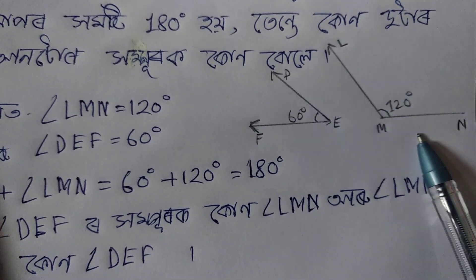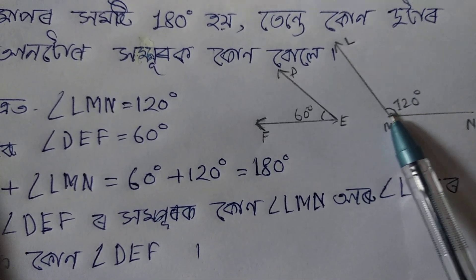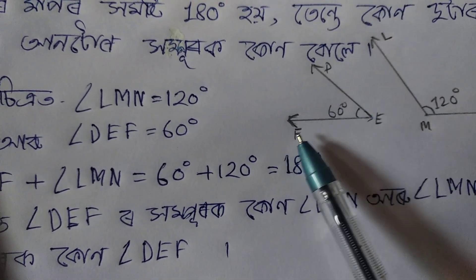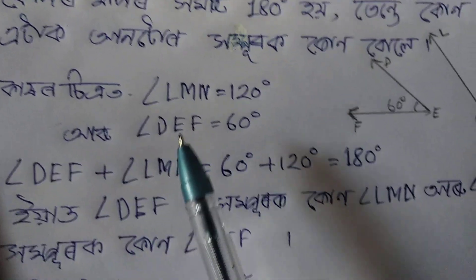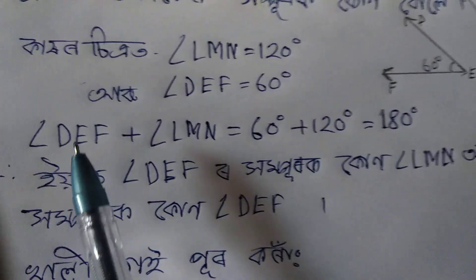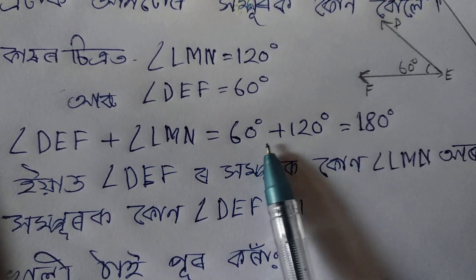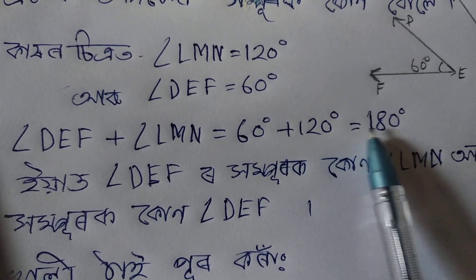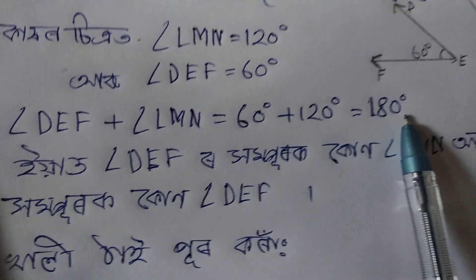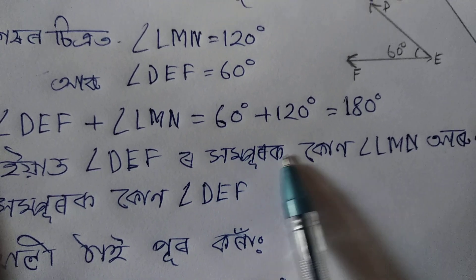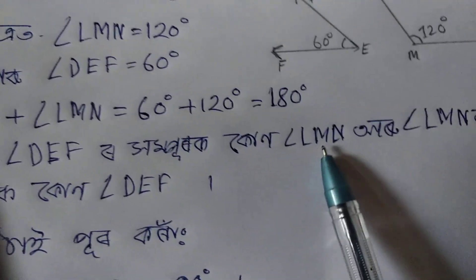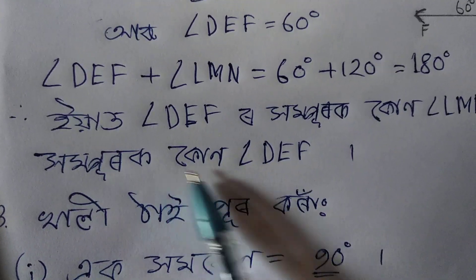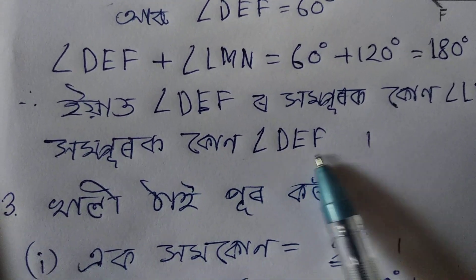LMN is 120 degrees and DEF is 60 degrees. If we have the same thing, COB is 60 degrees and 120 degrees. COB is a very important thing to know about COB.